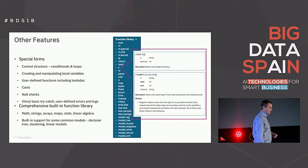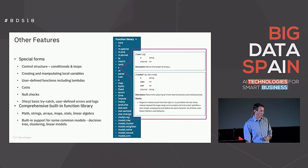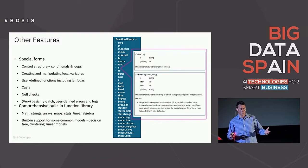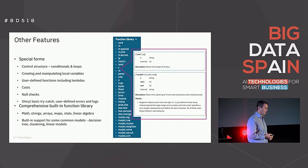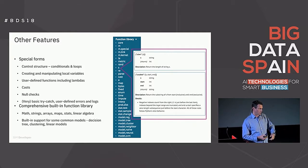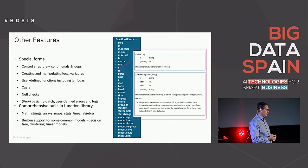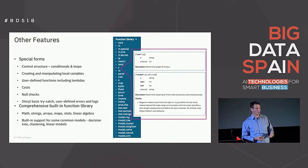Some other features of PFA are the special forms, which effectively make PFA act much more like a mini language. You have control structures — loops and conditionals. You can create local variables and update them. You can have user-defined functions that you create using any of the built-in functions. Casts, null checks, some very basic error handling. And it has a comprehensive built-in library — for example, string processing is a big part of typical feature engineering and extraction in machine learning, so it has comprehensive string processing functions much like you'd find in Python, R, or Java.